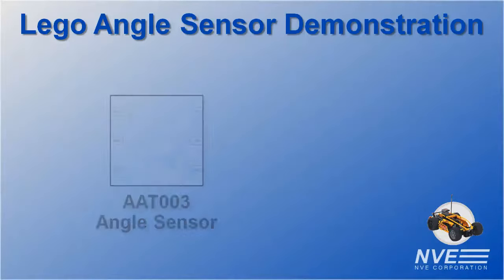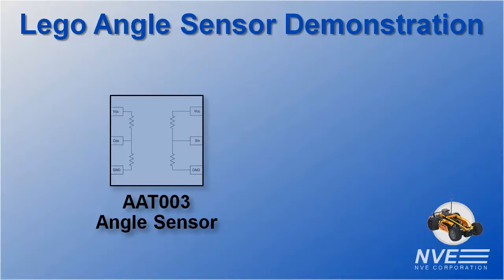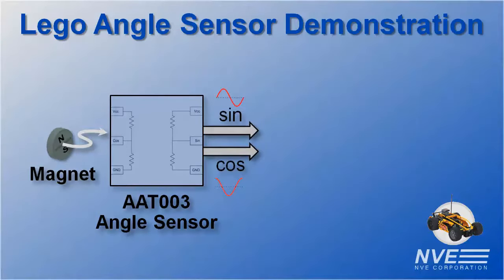To get wheel angle, we can use an AAT-003 angle sensor and a radial magnet. The sensor outputs follow the sine and cosine of the magnet angle.